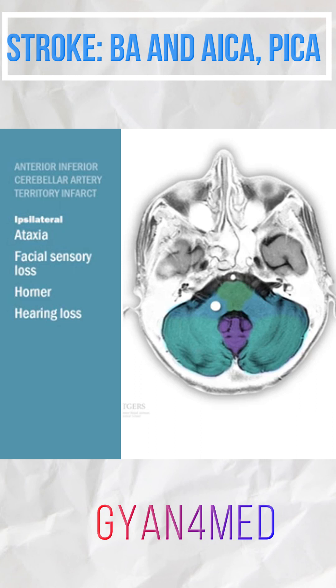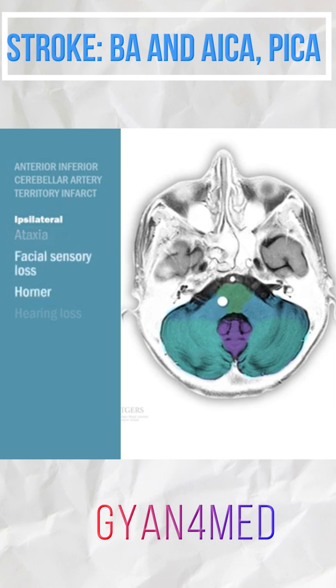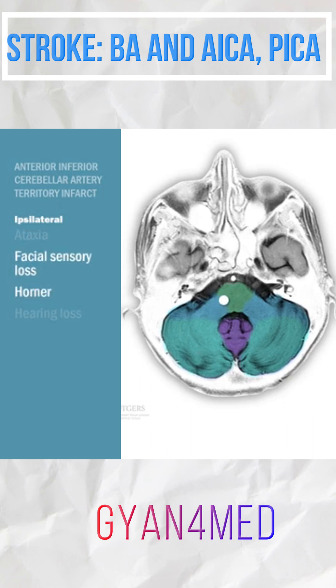AICA strokes can cause ipsilateral ataxia. AICA strokes can also damage some of the lateral pons, causing ipsilateral facial sensory loss and Horner's syndrome.